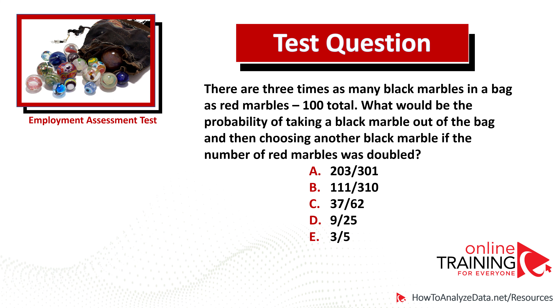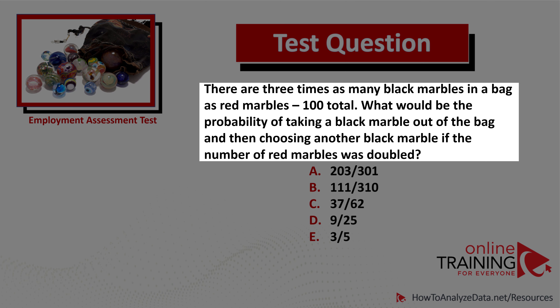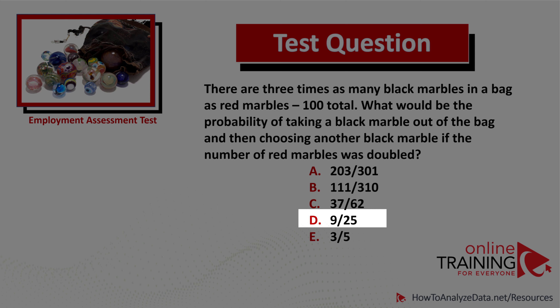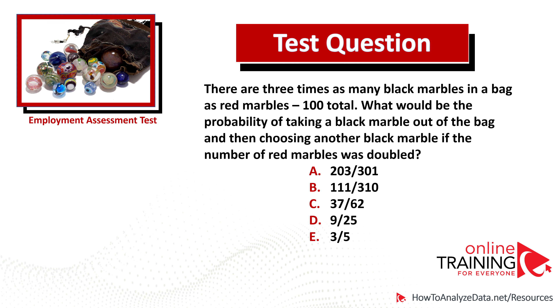Let's look at a very tricky question often used as part of advanced tests. There are three times as many black marbles in a bag as red marbles, with 100 total. What would be the probability of taking a black marble out of the bag and then choosing another black marble if the number of red marbles was doubled? You have five choices: 2/03, 3/01, 1/11, 3/10, 37/62, 9/25, or 3/5.